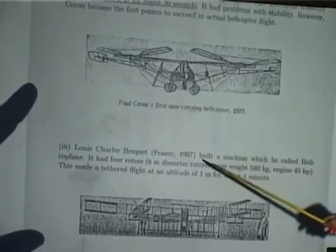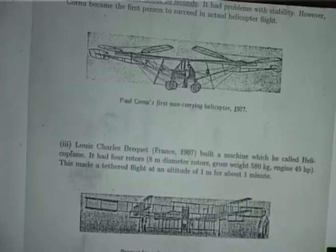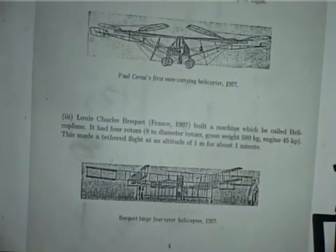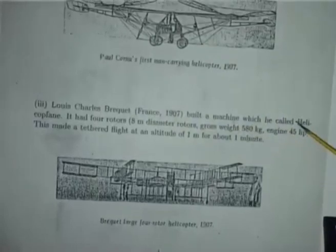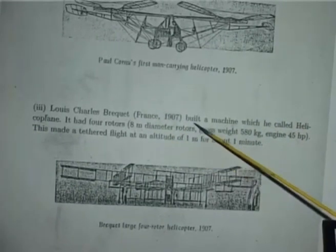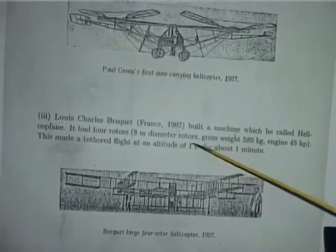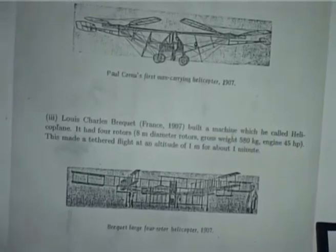Also in 1907, Louis Breguet built a machine he called the 'helico-plane' with four rotors of 8-meter diameter, gross weight 580 kg, powered by a 45 HP engine. This made a tethered flight at an altitude of 1 meter for about 1 minute.